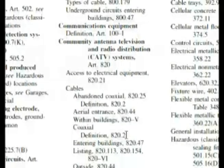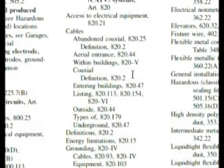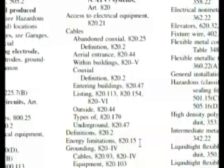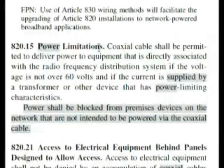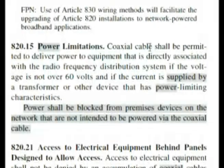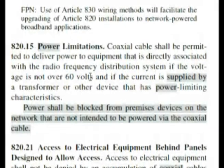Now remember when I said 'power limiting device'? Let's go down a little bit. As we're looking, here it is — energy limitations, 820.15. Here we are in our code book at 820.15 power limitations, and this is almost word-for-word: coaxial cable shall be permitted to deliver power to equipment that is directly associated with the radio frequency distribution system if the voltage is not over 60 volts — and the rest is word-for-word of our question.